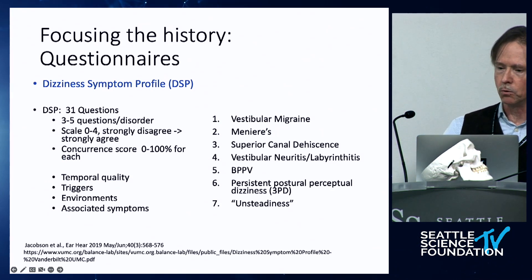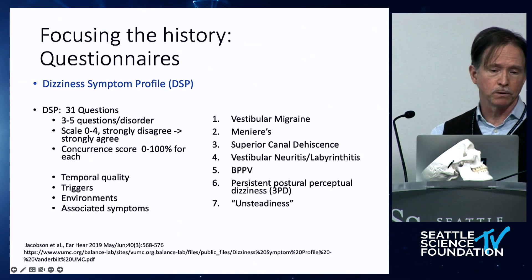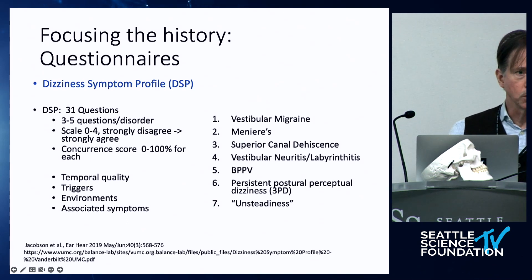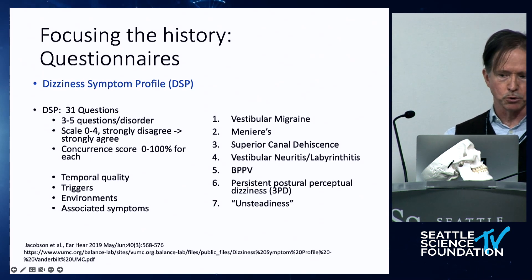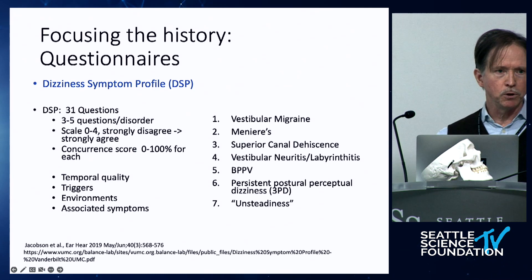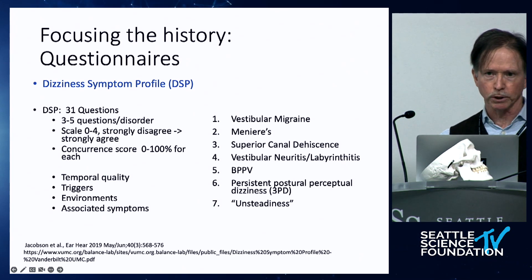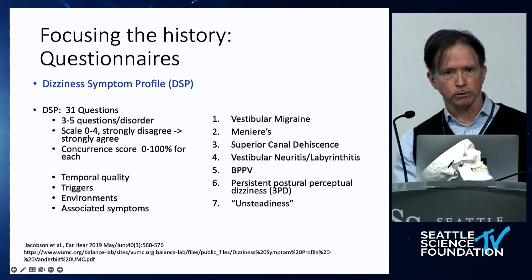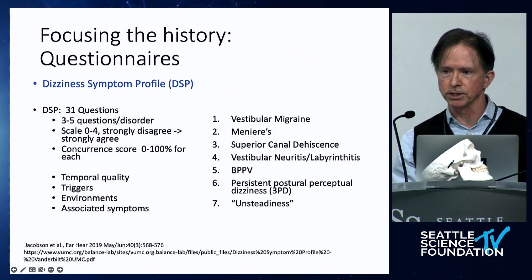If you want to be more comprehensive, the Dizziness Symptom Profile questionnaire can also be helpful for triaging. It's 31 questions designed to map onto seven different disorders listed on the right side, helping clarify your differential diagnosis. Patients rate how strongly they agree or disagree that each symptom matches their experience, covering duration, environmental triggers, and associated symptoms.